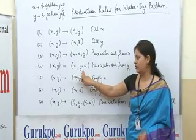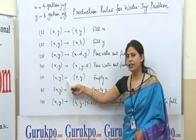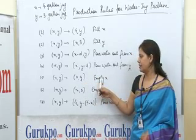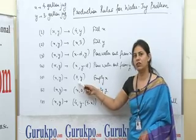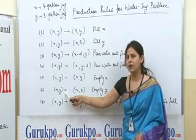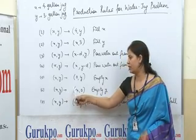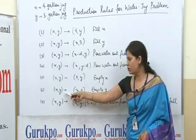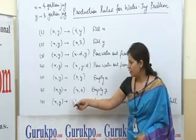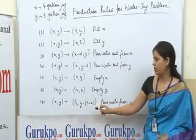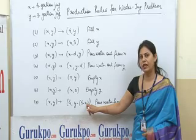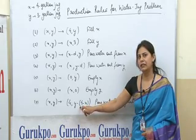The fifth rule states that XY can be converted into 0Y. This means the 4 gallon X jug can be emptied — we can empty all the water out from the X jug. The sixth rule specifies that we can convert the status of jugs XY into X0, meaning we can pour all the water of the Y jug onto the ground and empty the Y jug. The seventh rule states that XY can be converted into 4 and Y minus (4 minus X), meaning some water can be reduced from the Y jug.